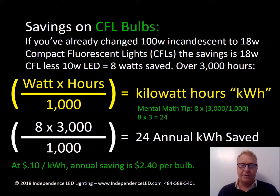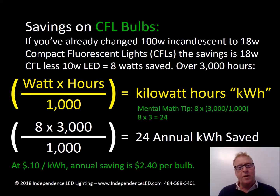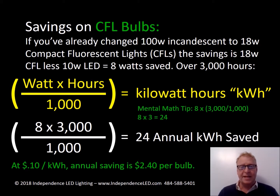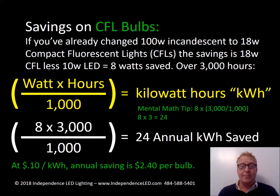Savings on CFL bulbs: you've probably changed a whole lot of incandescents to CFLs. For 100 watts, that's typically down to an 18 watt CFL. We can bring it down to just 10 watts with LEDs. 18 minus 10 leaves 8 watts saved. With the mental math and 3,000 hours, 3 times 8 is 24 kilowatt hours saved. At 10 cents, you're talking about saving $2.40 — some bulbs only cost that much. That means you get your money back in the very first year and they're going to last for well over a decade.